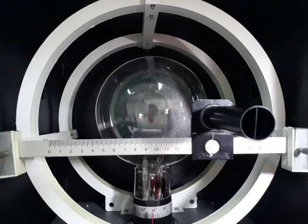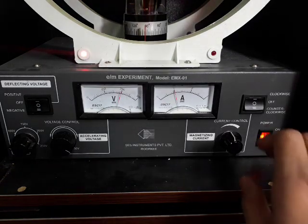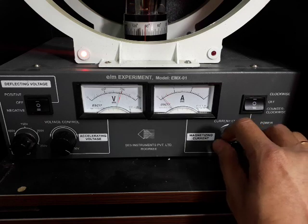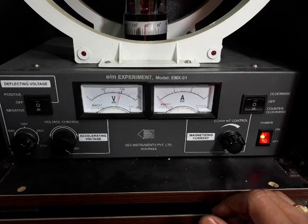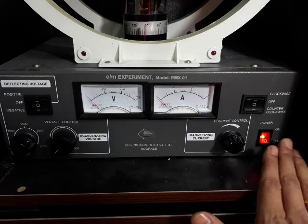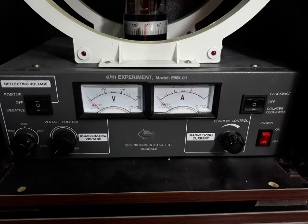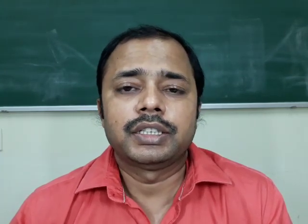Now the data collection is over. We will switch off the equipment in reverse order: first decrease the current, then switch off the clockwise mode, then reduce the voltage to minimum, and after that switch off the power button. Hence, with the help of our laboratory manual and data collected from this video, one can calculate the charge to mass ratio of an electron. Thank you.